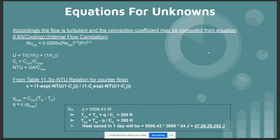Then we have, accordingly, the flow is turbulent, and the convection coefficient may be computed from the following equation: Nu is equal to 0.0265 times Re raised to 0.8 times Pr raised to 0.3. And U is equal to 1 divided by 1 divided by hi plus 1 divided by h naught. Cr is equal to c min divided by c max. NTU is equal to UA divided by c min. And using table 13.3, we get the following epsilon-NTU relation for the counter flow.